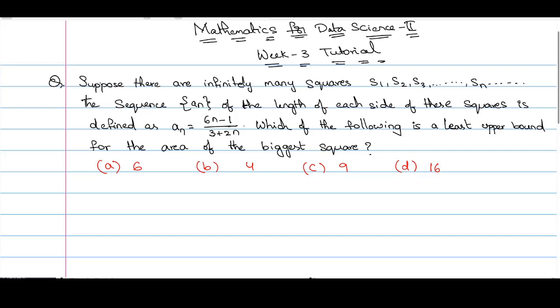Now, which of the following is the least upper bound for the area of the biggest square? We have given 4 options: option a is 6, option b is 4, option c is 9, option d is 16.